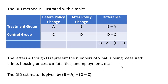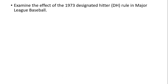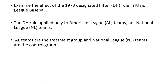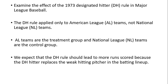Let's examine the effect of the 1973 designated hitter rule — the DH rule — in Major League Baseball. The DH rule applied only to American League teams at the time, and still does today, not National League teams. American League teams are the treatment group; National League teams are the control group. We expect the DH rule should lead to more runs scored because the DH hitter replaces the weak-hitting pitcher in the batting lineup.